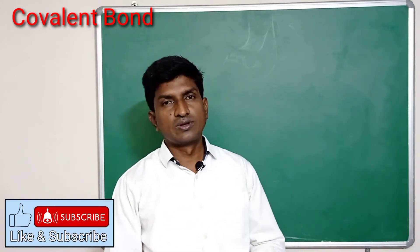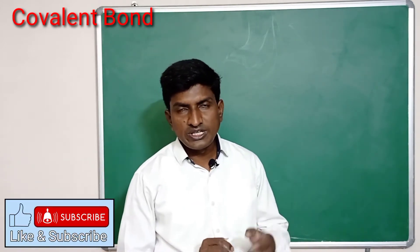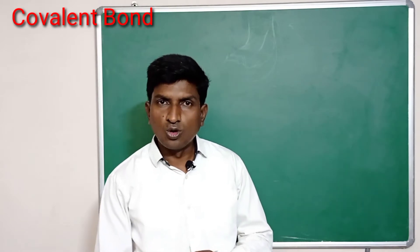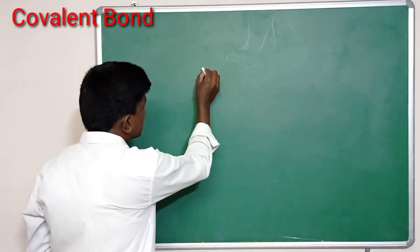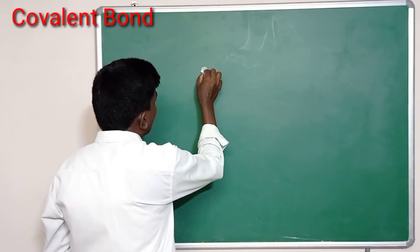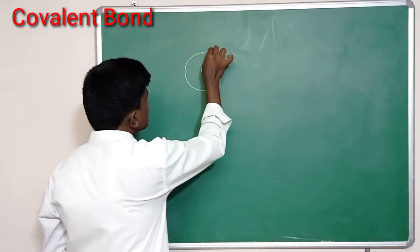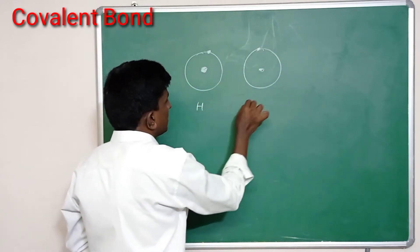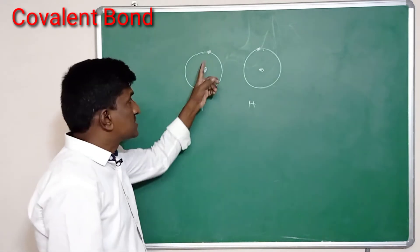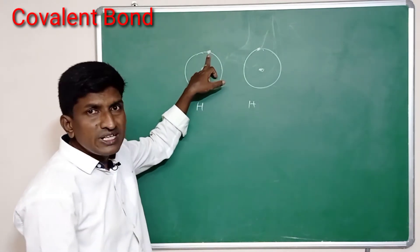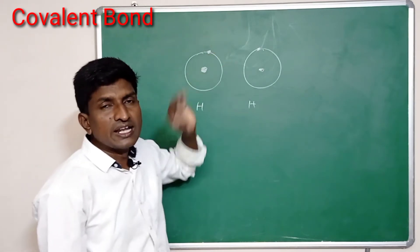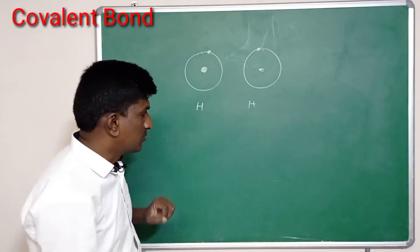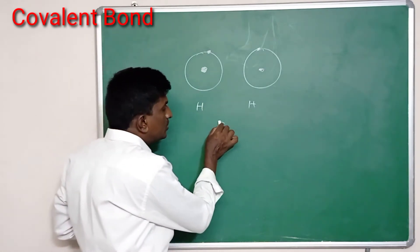Let us discuss one example. When two hydrogen atoms come close to each other, do they transfer the electron from one atom to another? No, it is not possible. Why? Because hydrogen has only one electron in its outermost orbit. When two hydrogens come close to each other, how can they transfer the electron? It is not possible to transfer the electron.